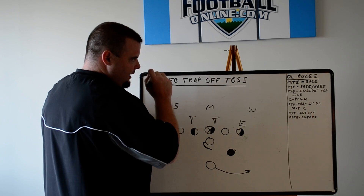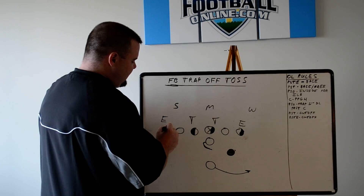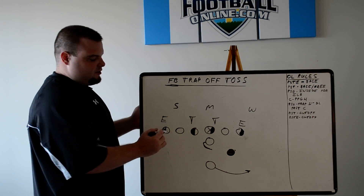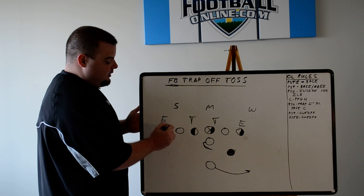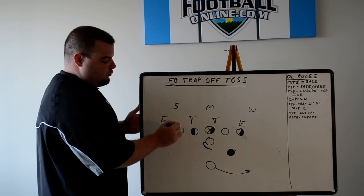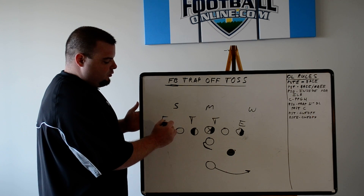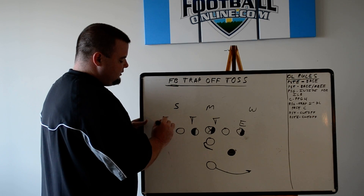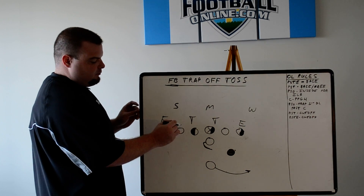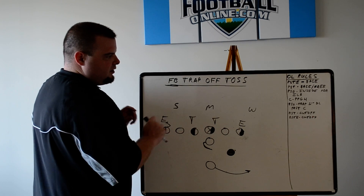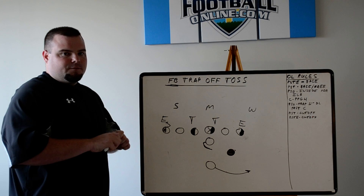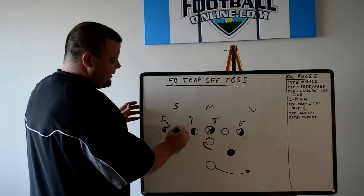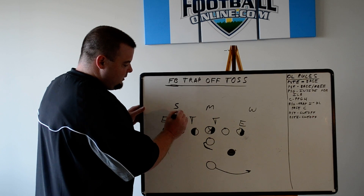The rules for fullback trap. The playside tight end is going to have a base block. The playside tight end will almost always have some type of 9 technique. If he has a 7 technique, we can do different things there. But against a traditional front, he's going to get a 9 technique — step inside and get him out of there so he doesn't slant and beat you. The playside tackle is going to be base free. If he has an outside guy, he's going to base block him. If not, he's free — right now he's free for the middle linebacker.